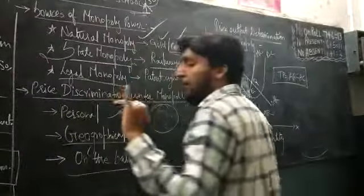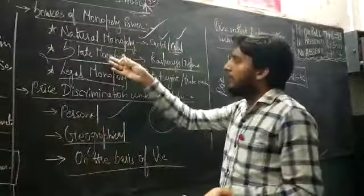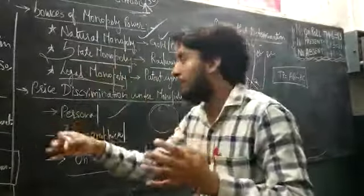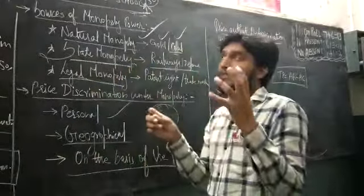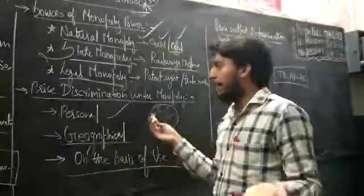Natural monopoly, given by the almighty, a natural resource. State monopoly, fixed by any government. Legal monopoly, you have certain item on that you can have a legal monopoly.